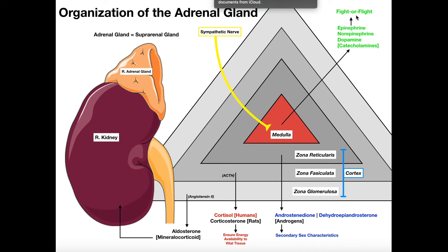Epinephrine in particular produces a fight-or-flight response — a sympathetic response. The stimulus for the adrenal medulla to release catecholamines is activity of the sympathetic nerve, which innervates the adrenal medulla. When the brain perceives the need for a fight-or-flight response, the sympathetic nerve generates action potentials that innervate the medulla, triggering it to release these substances via exocytosis directly into the blood, where they act very, very quickly.